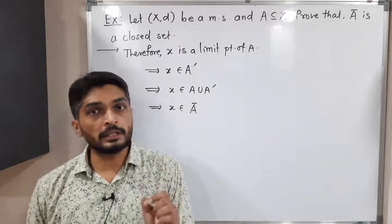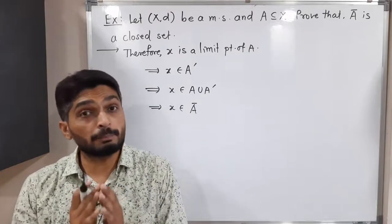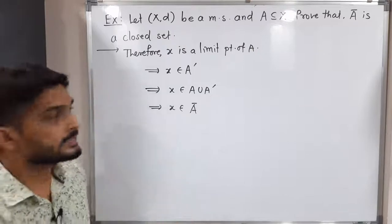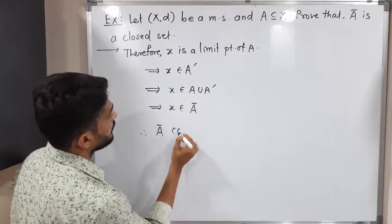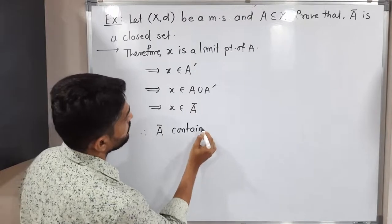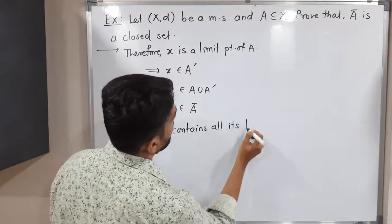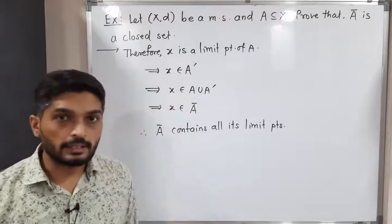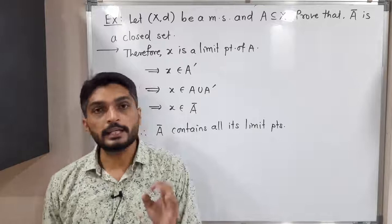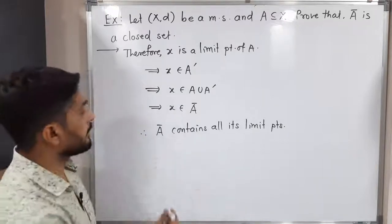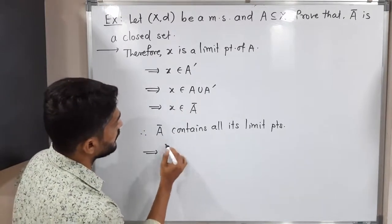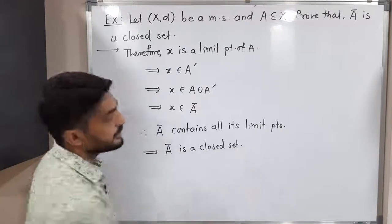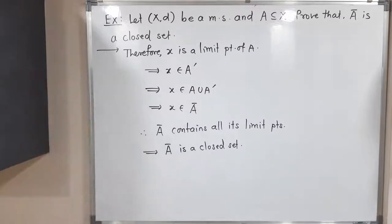Since x was any arbitrary limit point of Ā and we proved x belongs to Ā, therefore Ā contains all its limit points. Since any set that contains all its limit points is a closed set, therefore Ā is a closed set. This completes the proof.